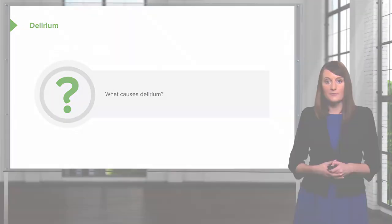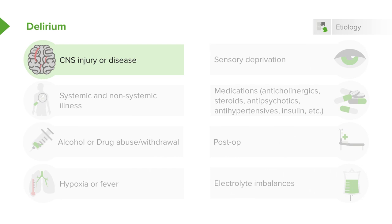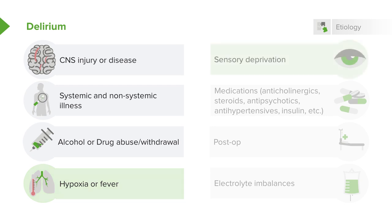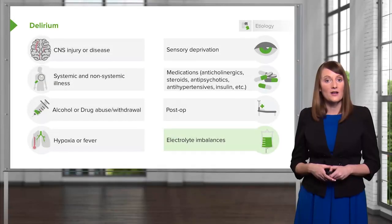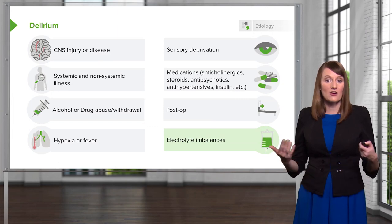What causes delirium? There are a lot of different causes, and it's really important that you go through all of them to find what's at the root of the delirious patient so you can treat and reverse it — because remember, delirium is a reversible condition. Think about CNS injuries or disease, systemic and non-systemic illnesses, drug abuse or withdrawal, hypoxia, fever of unknown origin, sensory deprivation, and medications such as anticholinergics, steroids, and antihypertensives. It's also very common postoperatively after surgery, and electrolyte imbalances such as low sodium can also cause someone to appear delirious.